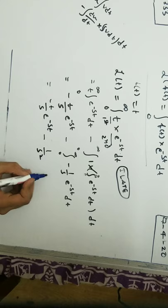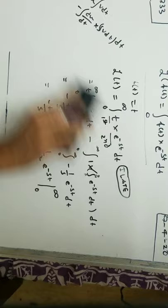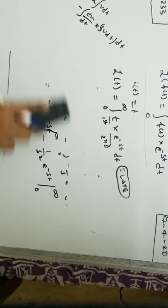Minus t by s e to the power minus st plus 1 by s squared e to the power minus st, and the limits are from 0 to infinity. Let me just erase this part.